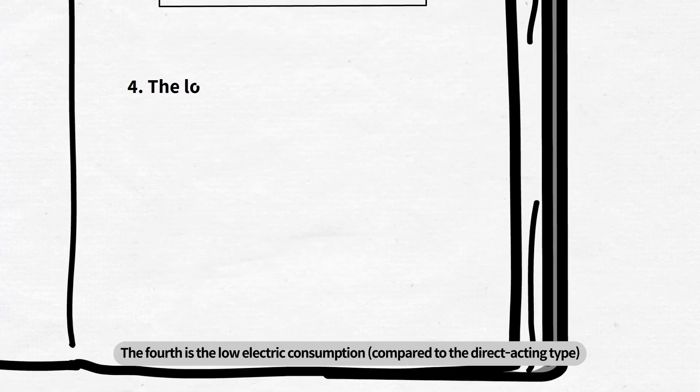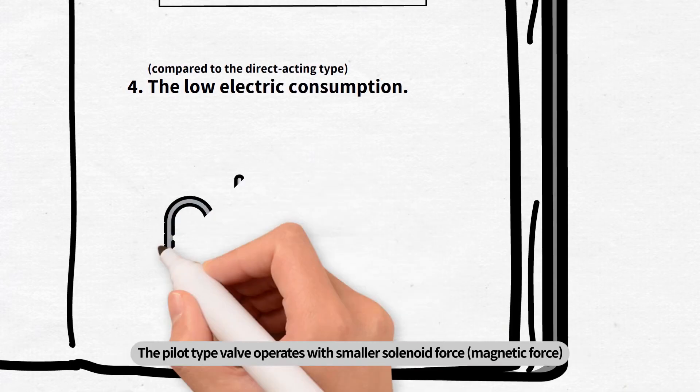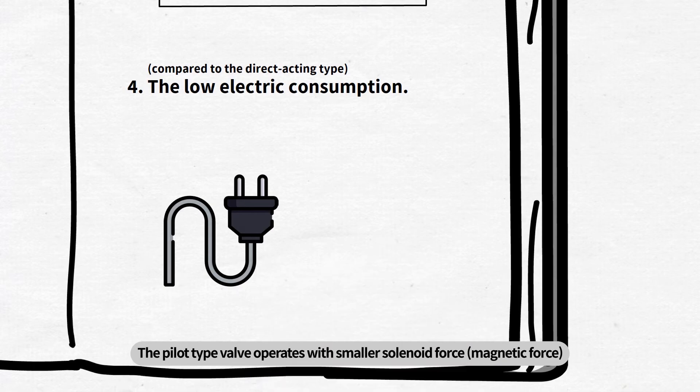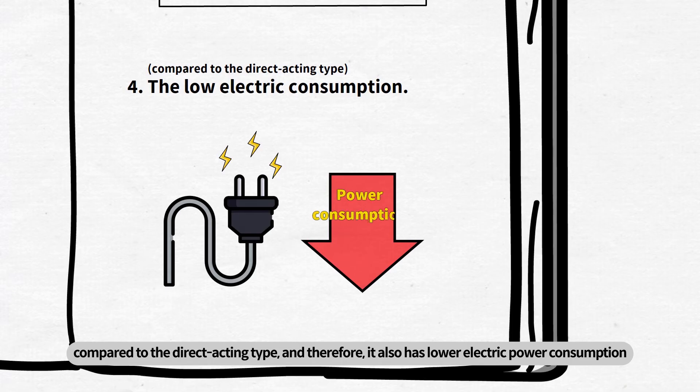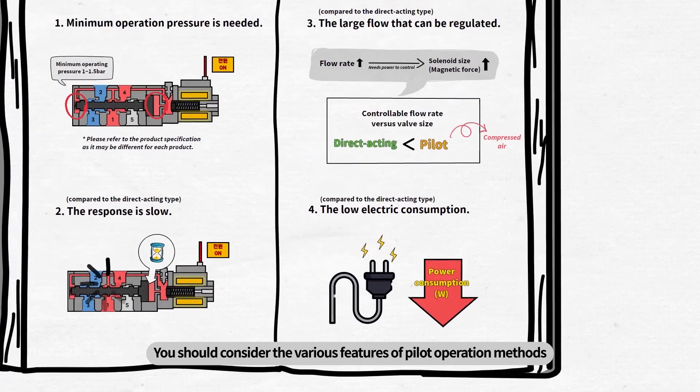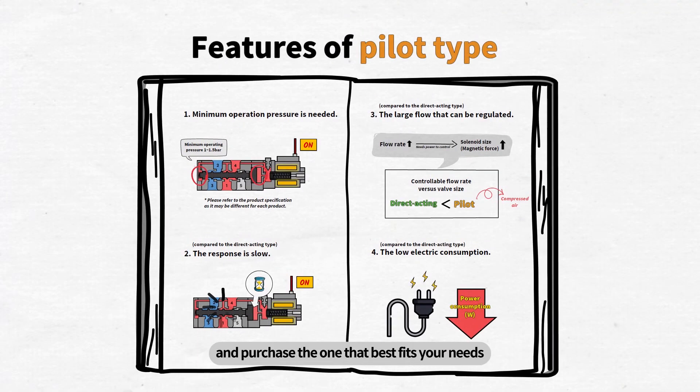The fourth is the low electric consumption. The pilot type valve operates with smaller solenoid force compared to the direct acting type, and therefore it also has lower electric power consumption. You should consider the various features of pilot operation methods, and purchase the one that best fits your needs.